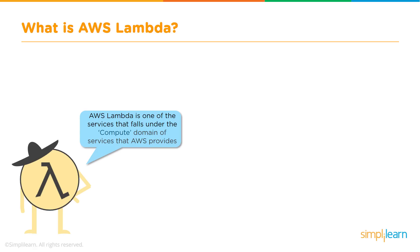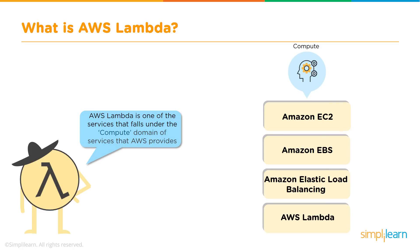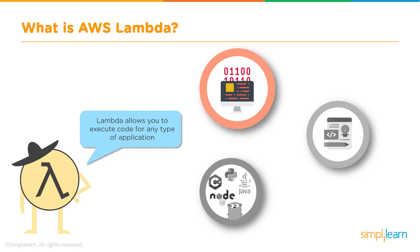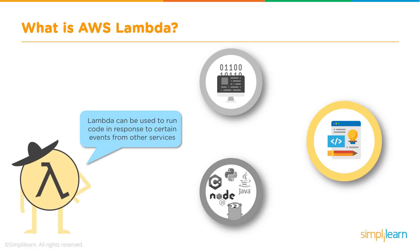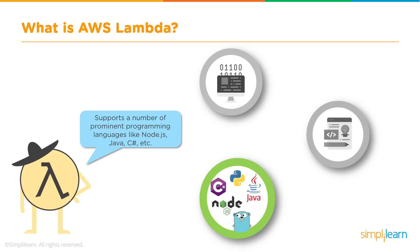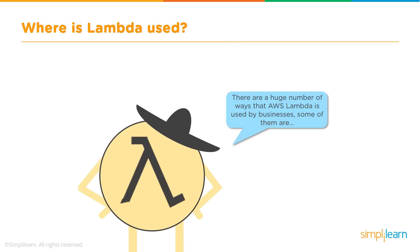AWS Lambda falls under the compute domain of services AWS provides, alongside EC2, EBS, and Elastic Load Balancer. Lambda allows us to execute code or any type of application. We can run code for virtually any type of application or back-end service — all we need is to supply our code in a supported language. The languages AWS Lambda supports are Node.js, Java, C#, Go, and Python. Lambda can run code in response to events from other services.